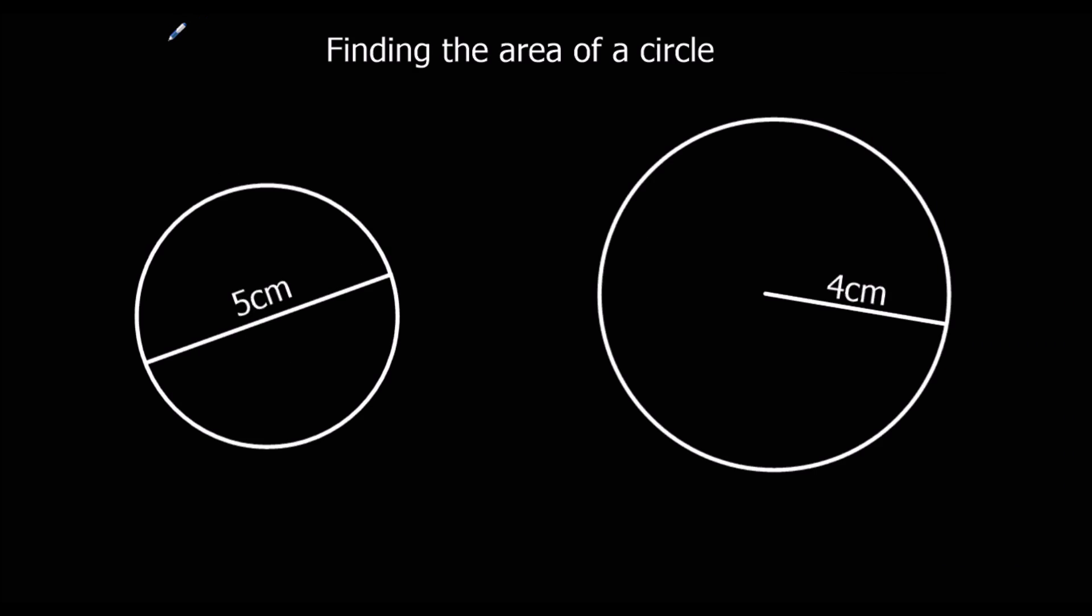Okay, so we've got two more examples here. We need to use the formula for the area of a circle, which is pi times the radius squared.